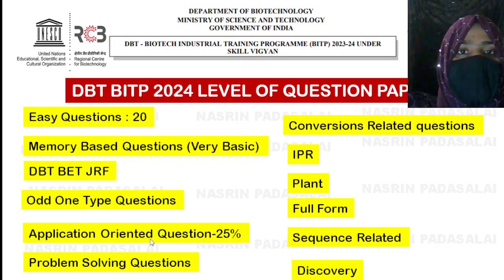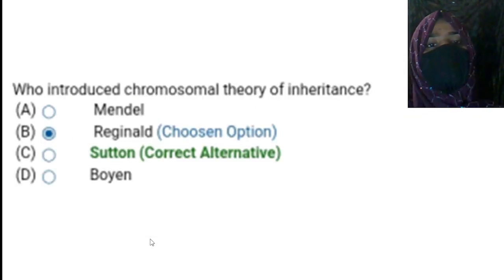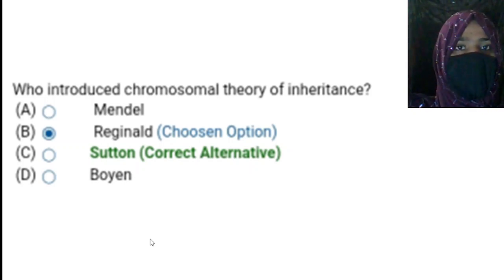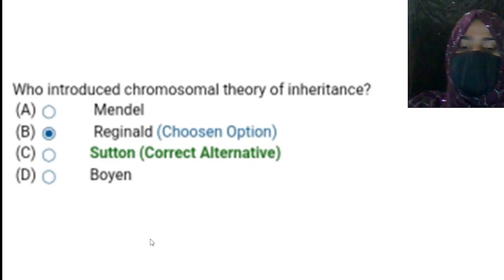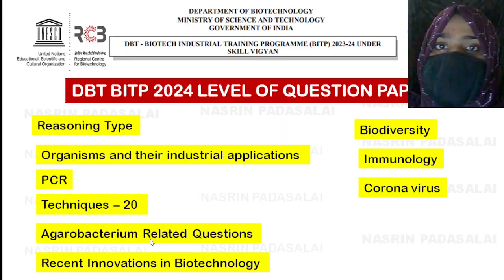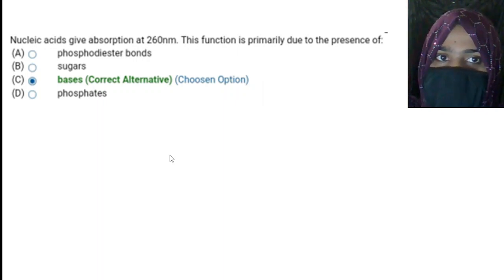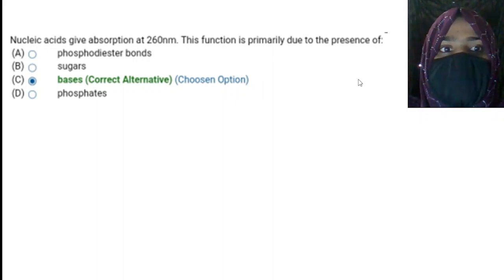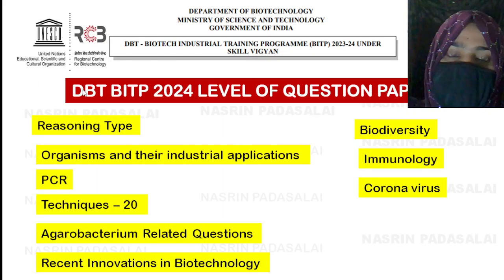Discovery-related questions are also asked — for example, who introduced the chromosomal theory of inheritance, or who was the father of genetics. Focus on discoveries related to biotechnology specifically. Reasoning-type questions can also be expected. One example: nucleic acids give absorption at 260 nm — this function is primarily due to the presence of bases. You might get confused between bases and sugar, but the correct answer is bases.